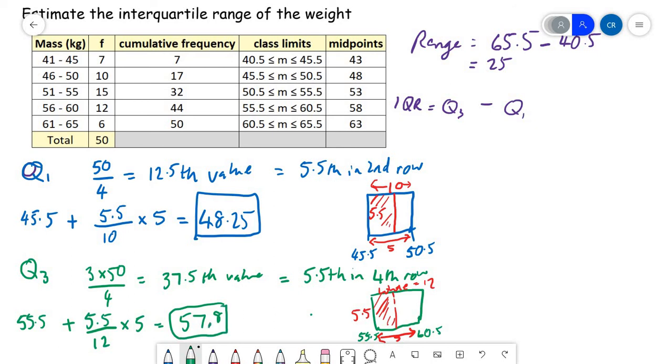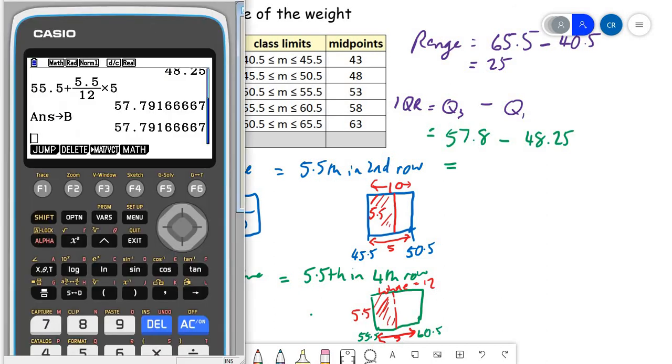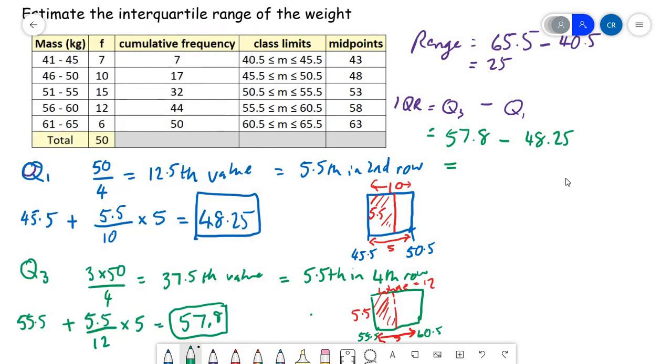So finally, we can work out our interquartile range. Now, although I'm only writing down three significant figures for that one, I am going to use my calculator to make sure I'm using the exact values. So the interquartile range is 9.54.